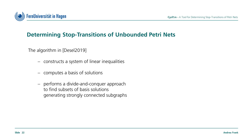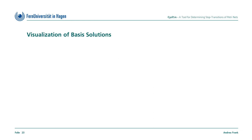The algorithm, which is implemented in our tool, determines stop transitions by identifying and processing non-decreasing closed paths in a coverability graph of the net. The algorithm involves constructing a homogenous system of linear inequalities over the arcs of the coverability graph. It involves computing a basis of solutions and it involves performing a divide and conquer approach on these solutions to find subsets of basis solutions generating strongly connected subgraphs. Below, I'd like to go into the visualization of the computed basis solutions.